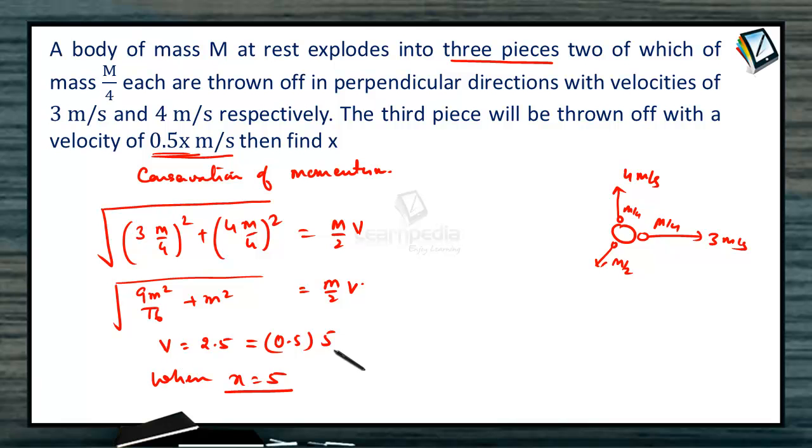Velocity will become 2.5 meter per second. So in the equation, x should be 5. So find the value of x, x should be equal to 5.